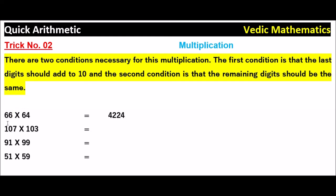Now 107 into 103, here 7, 3 is a 21. And the next number is 10, same number is 10. What is the next number after 10? 11. So 10, 11 is a 110.